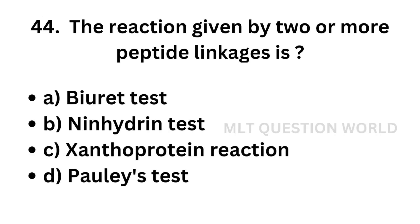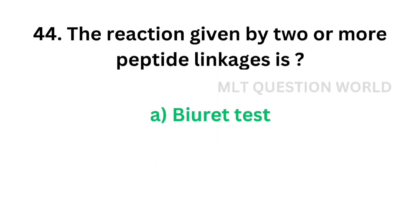Question number 44: The reaction given by two or more peptide linkages is — option A: biuret test, option B: ninhydrin test, option C: xanthoproteic reaction, option D: Pauly's test. The correct answer is option A, biuret test. The biuret test involves two or more peptide linkages.